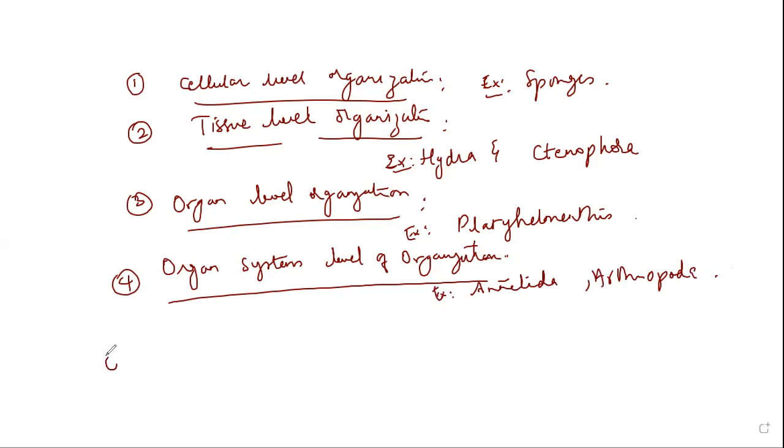Here you can see the hierarchy. Cells give rise to tissues, tissues give rise to organs, organs to organ systems, and finally a full organism. This is the level of organization in basis of classification. In my next video, you're going to see the body plan in animal kingdom. Thank you.